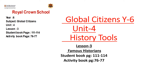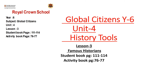Right now we start our new lesson — that is the third lesson from history tools. Before, we already discussed about history, chronology, and the primary and secondary tools which are required for writing history. Here we have the famous historians. Today we are talking about the famous historians, and my lesson objective is to describe the way famous historians wrote history, like Herodotus and Ibn Khaldun, the Muslim scientist.